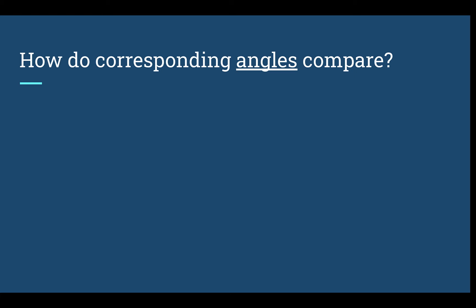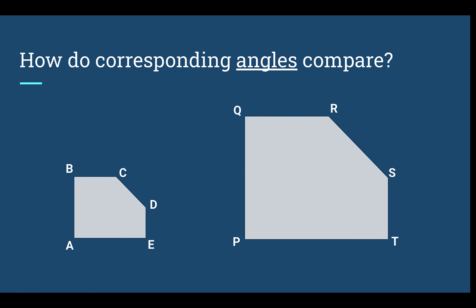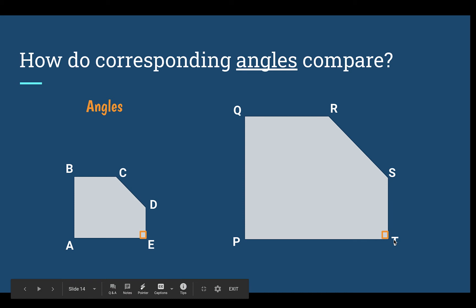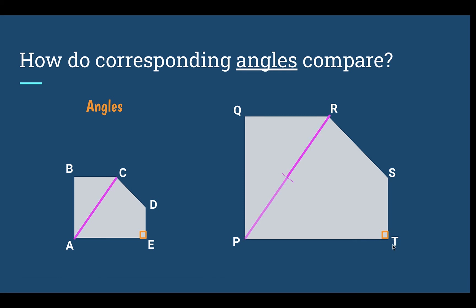Now let's check about angles, using the same two shapes. We know the sides and distances were times two. Let's look at angle E — it's a right angle. Angle T is also a right angle. The distances were times two, but the angles are not times two. What would happen if we actually made an angle times two? Originally, angle A going along the line toward C was 55 degrees, and P to R was also 55 degrees. If we made that times two, it would go off the shape — that's not where the distance should go.